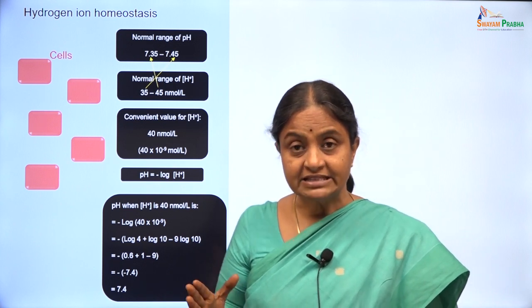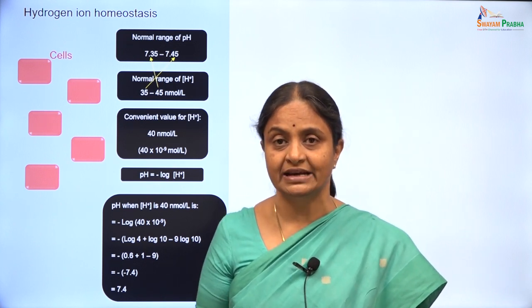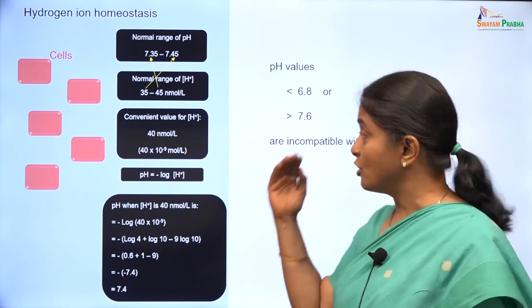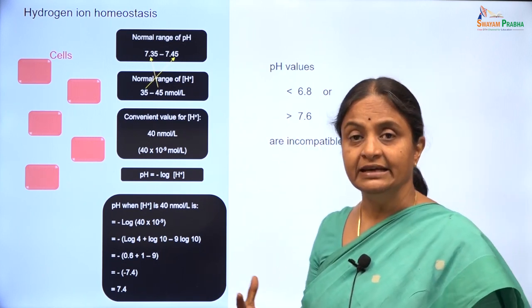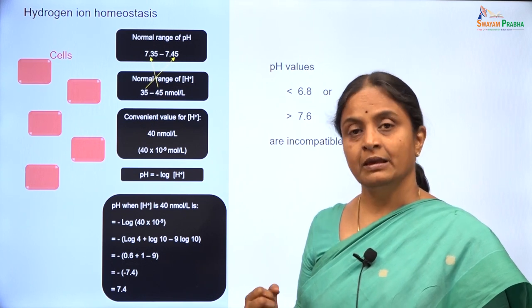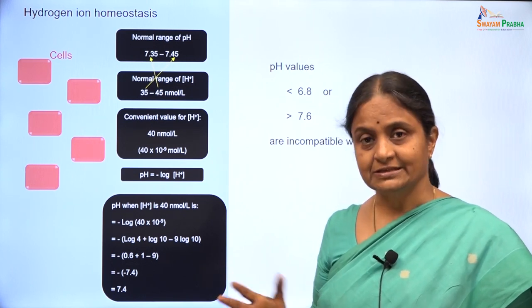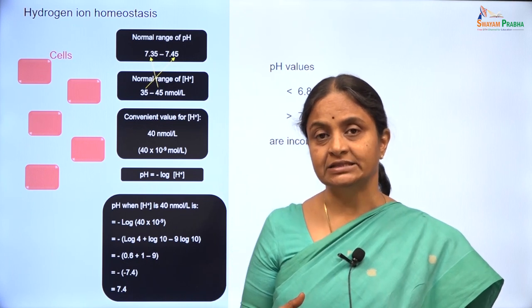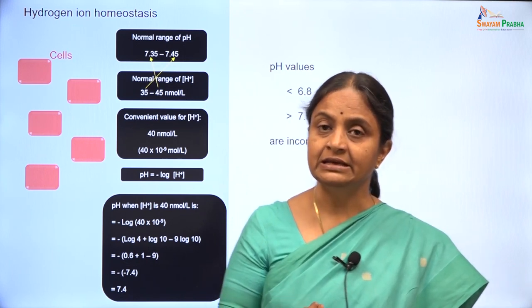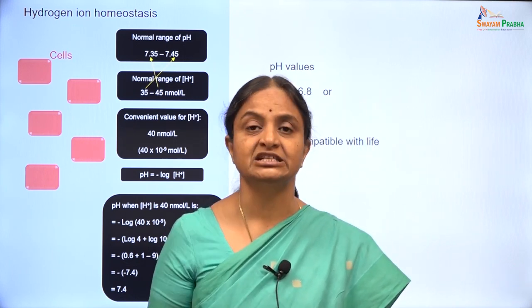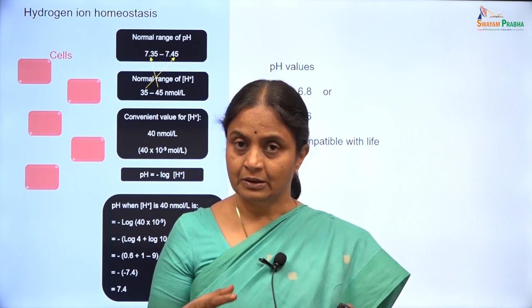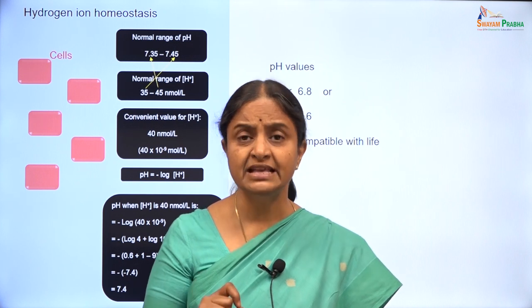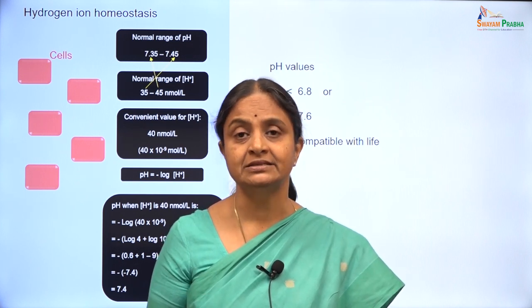What are the extremes that can occur during life? pH cannot drop below 6.8 in a living organism. In mammals, while experimenting with rats, we have not seen pH less than 6.8 while the rat is anesthetized and still living. The same is the case for human beings.